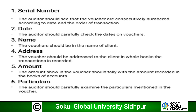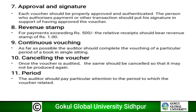Particulars: the auditor should carefully examine the particulars mentioned in the voucher. Approval and signature: each voucher should be properly approved and authenticated; the person who authorizes payment or other transaction should put his signature in support of having approved the voucher. Revenue stamp: for payments exceeding rupees 500, the relative receipt should bear a revenue stamp of rupees 1.